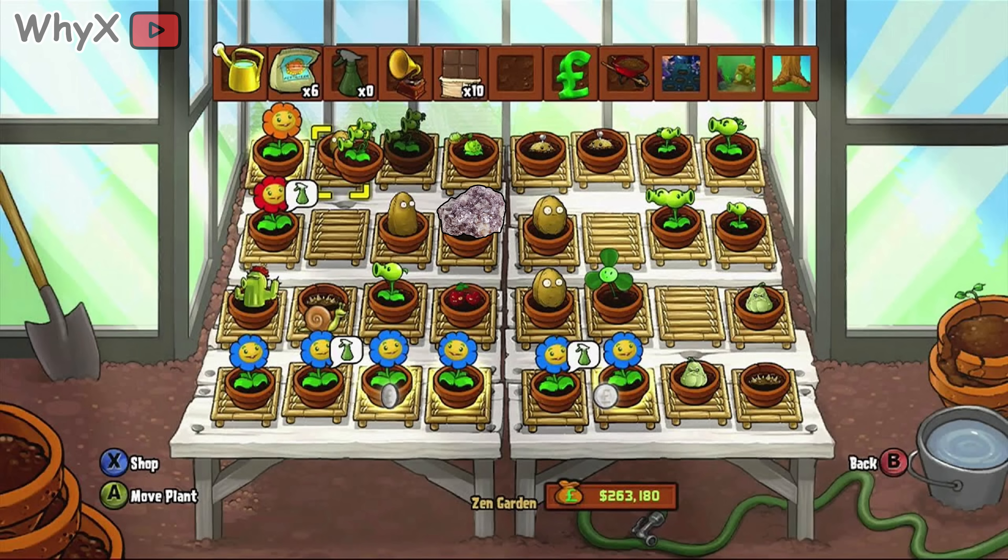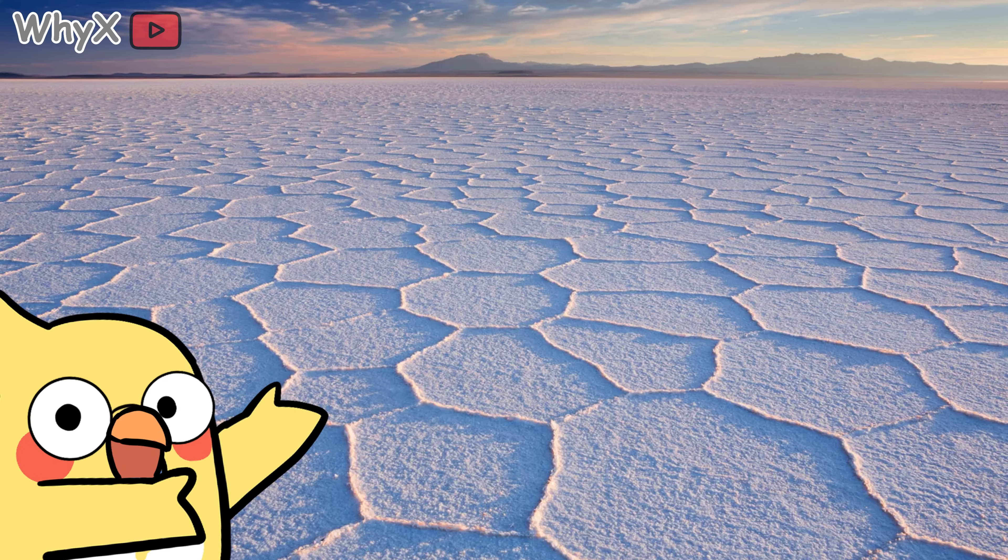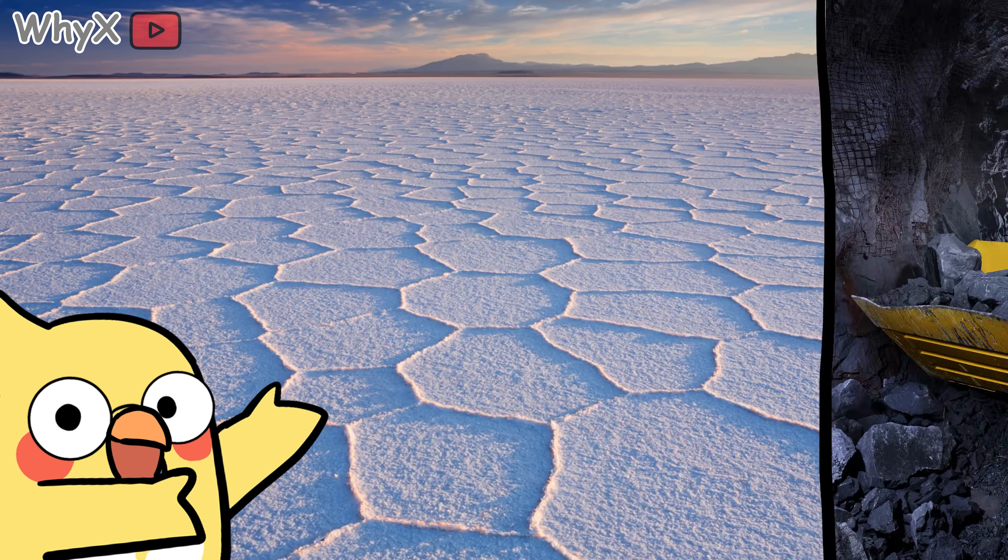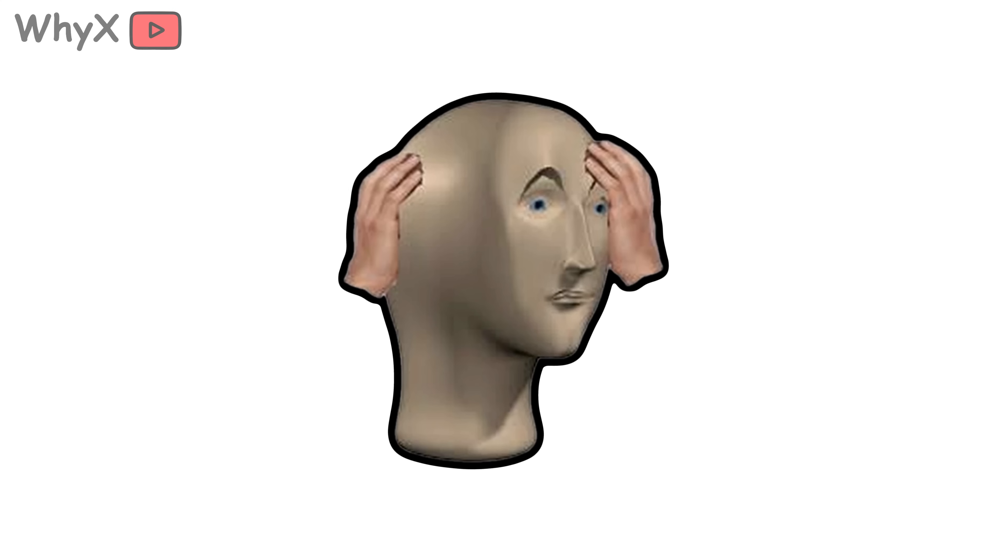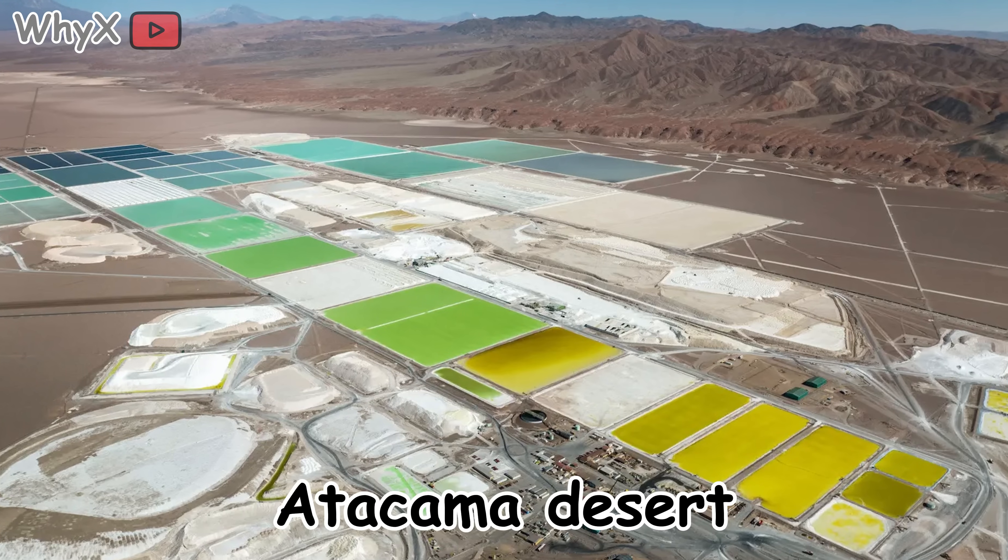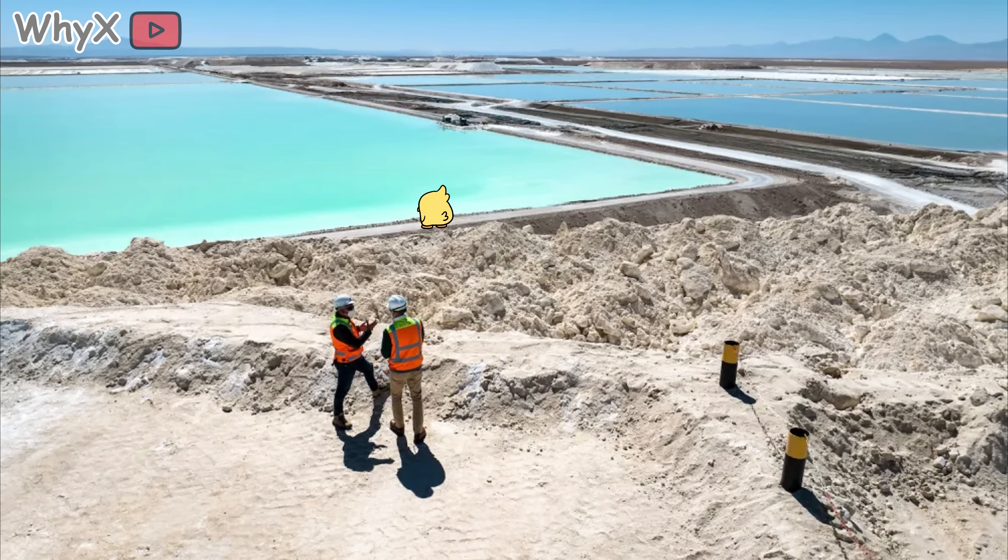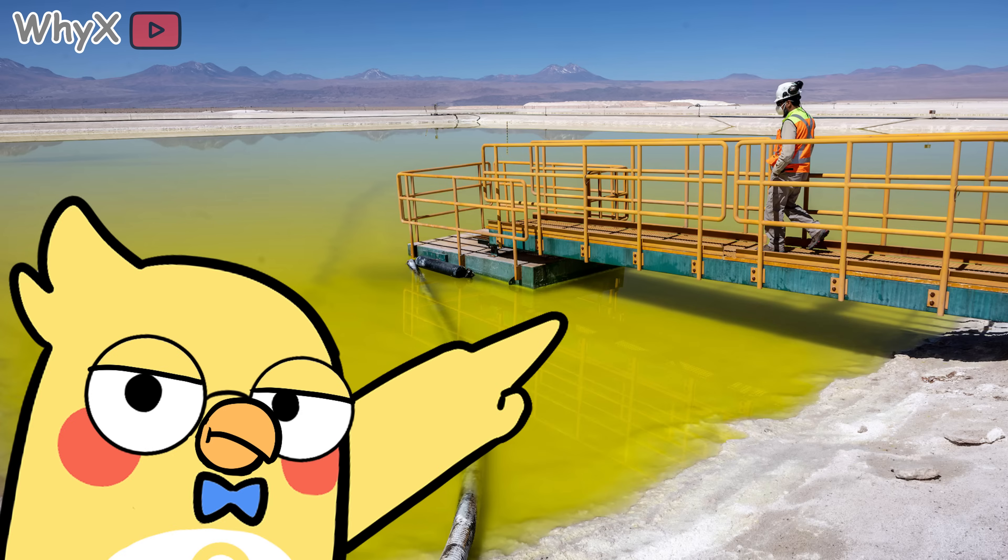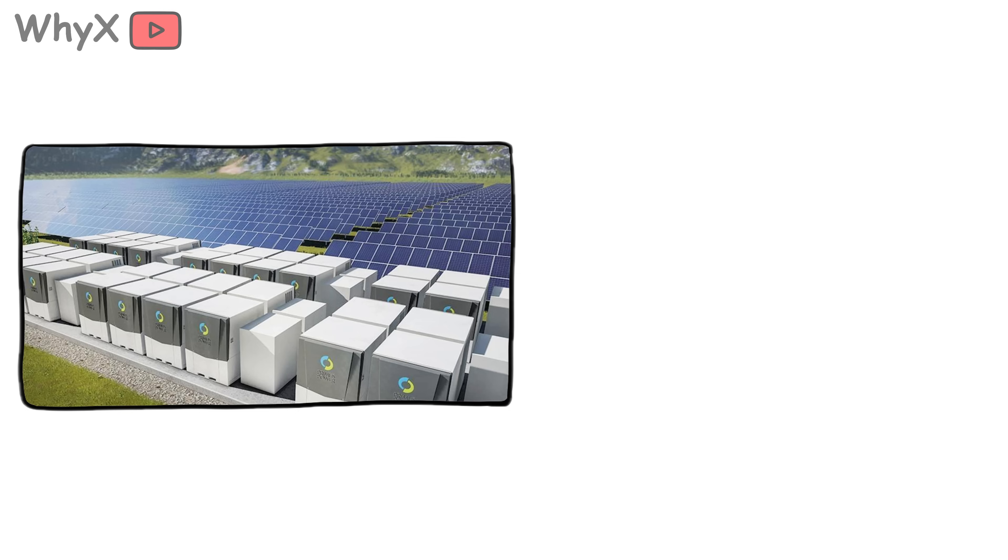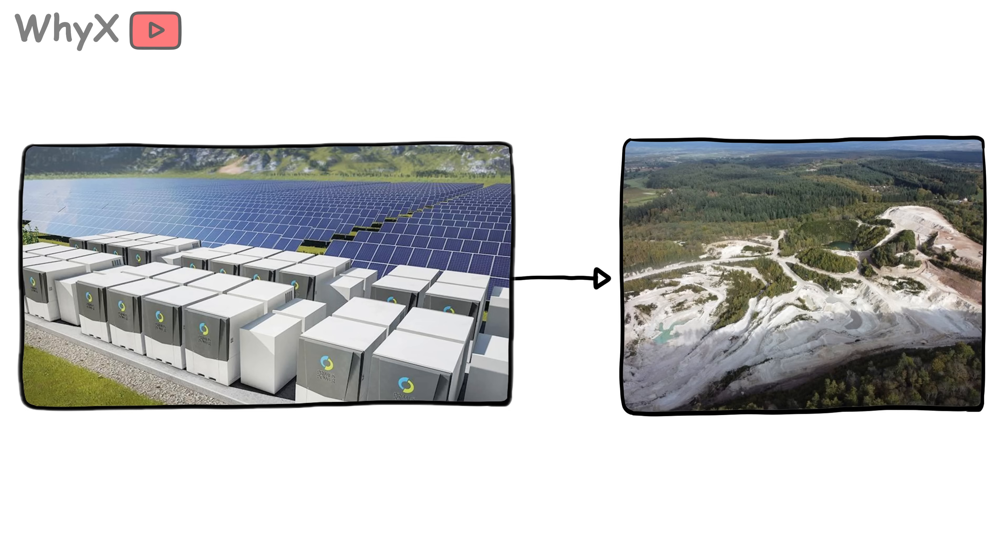But here is the catch. Lithium is not something you grow in your backyard. It has to be extracted from salt flats or hard rock mines in places like Australia, Chile, and Argentina. And this is not exactly a gentle process. In some areas, like the Atacama Desert, pulling lithium out uses so much water that it is like draining an Olympic swimming pool in the middle of a drought. This makes it a tricky balancing act. Lithium powers clean energy tech, but getting it can hurt the environment.